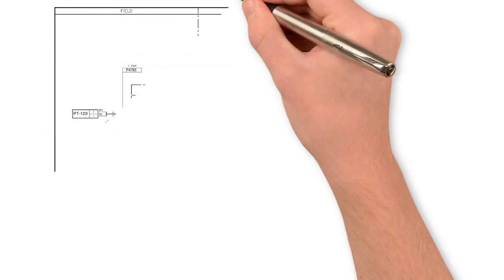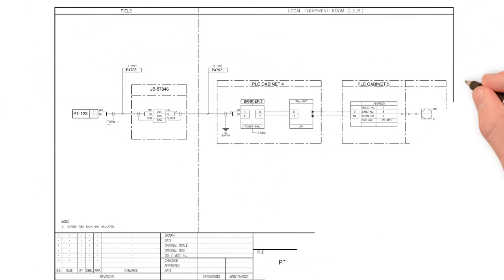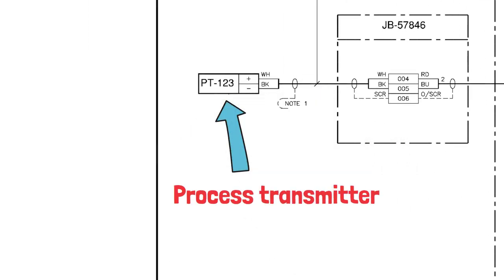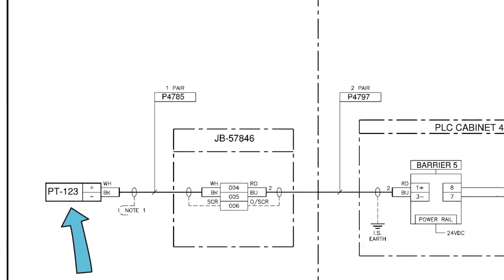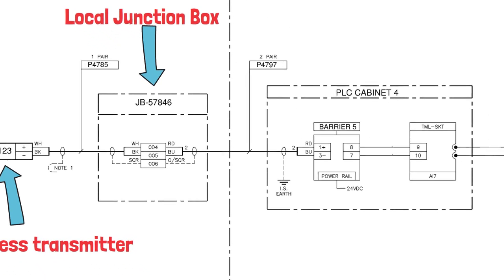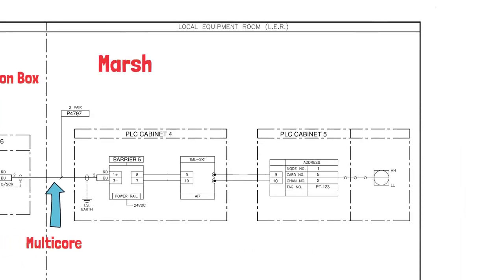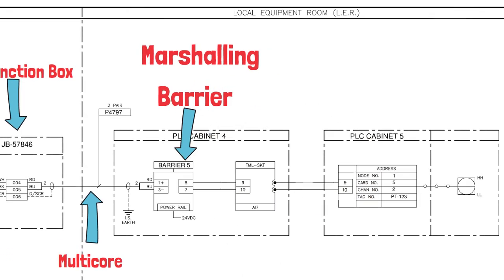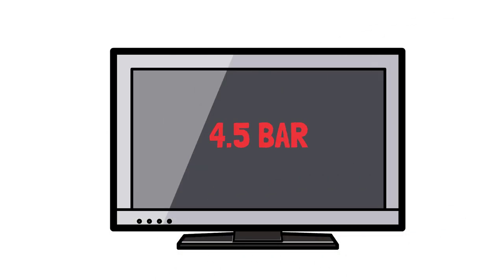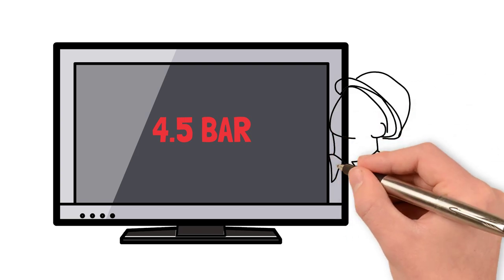Here is the configuration of the type of loop we'll be fault finding on. The field transmitter will be connected to the process, maybe by small bore tubing or directly in pipework or a vessel. The two-wire transmitter is going to pass through a local junction box and onto a multi-core back to a marshalling cabinet, likely in an equipment room. In the marshalling cabinet, the loop will have an input isolator or barrier, and then the loop will be terminated into a PLC input card. The process variable will then be displayed on an HMI, or human machine interface, that a plant operator will be monitoring.